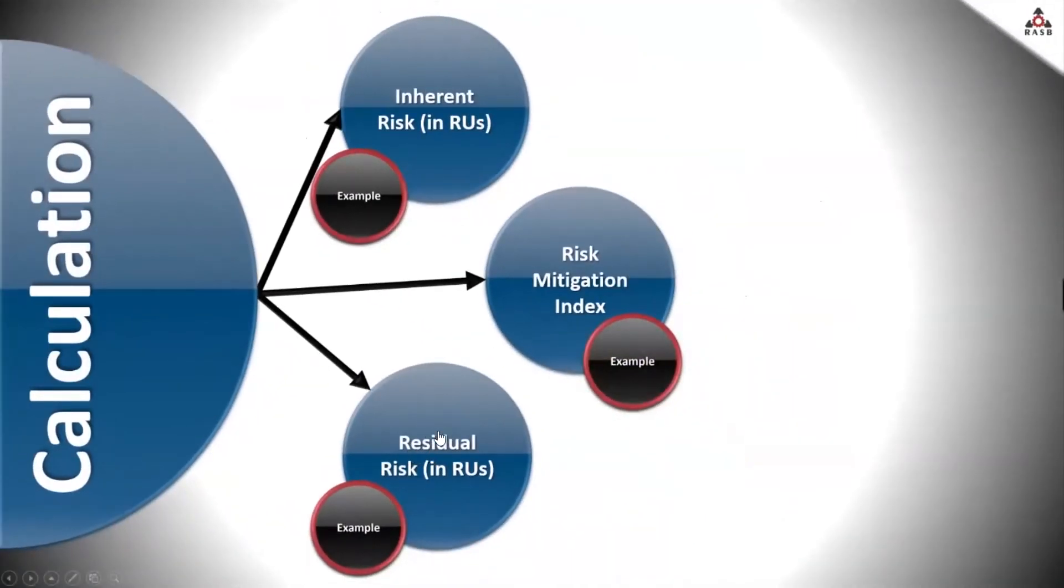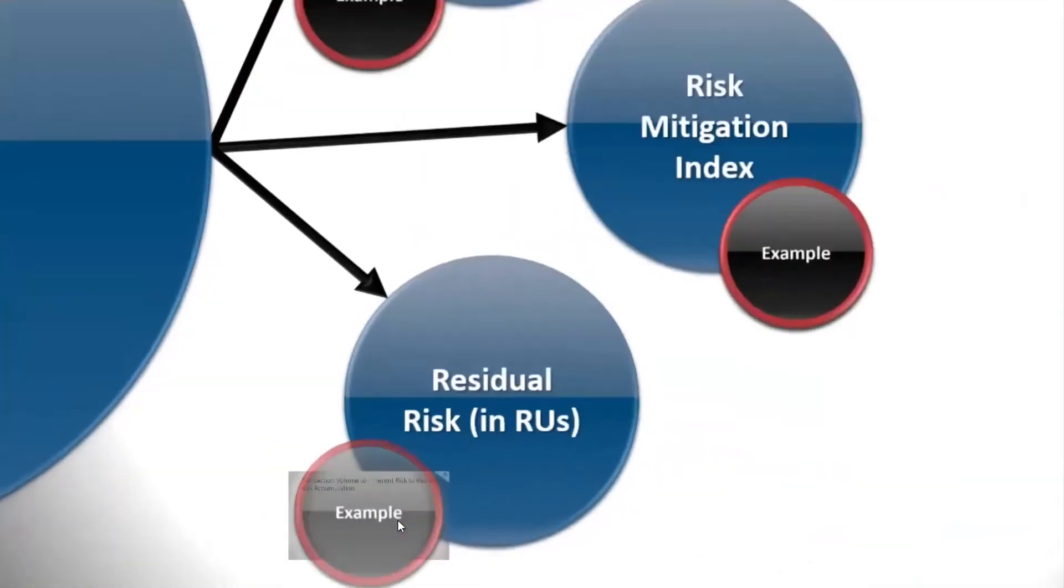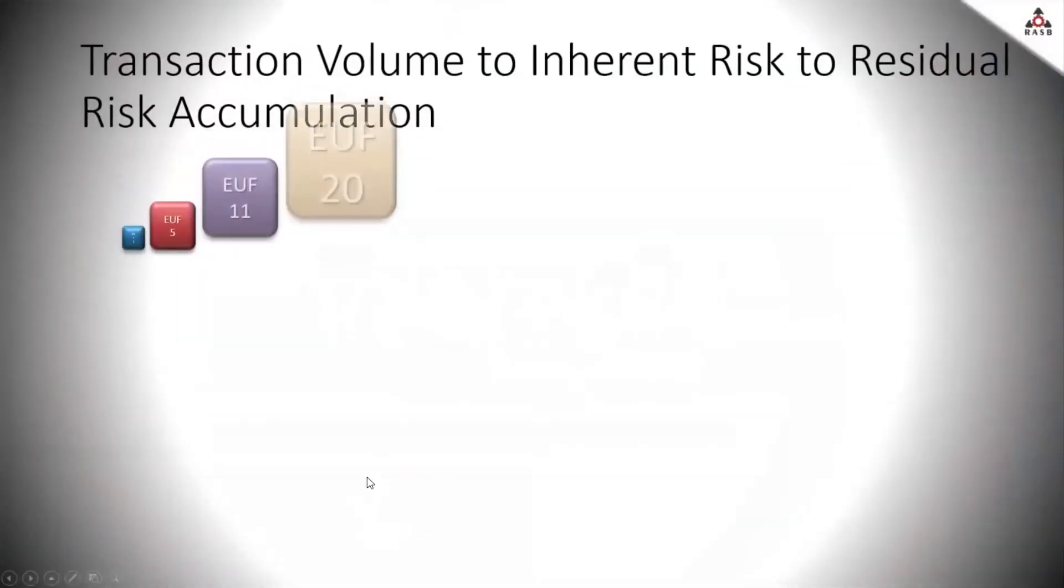The residual risk represents basically the actual exposure to non-financial risk. And it is the most important metric from the method because its value directly correlates with the actual losses. This is where basically losses are coming from in the method's understanding.